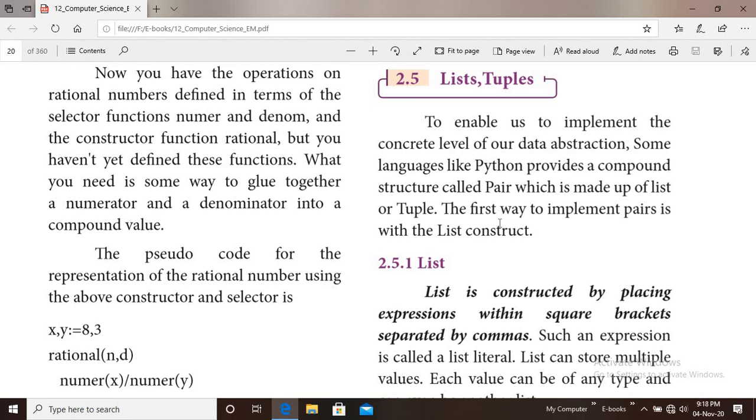In today's class, we are going to start with lists and tuples. To enable us to implement the concrete level of our data abstraction, some languages like Python provide a compound structure called pair, which is made up of list or tuple. The first way to implement pair is with a list construct.